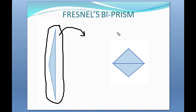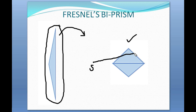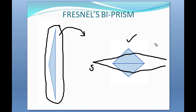Now if you think that this is Fresnel's biprism, here there is a source and the light travels in this way. A prism bends light such that the angle of deviation is different for different prisms. One ray bends in this direction and the other ray also bends in this direction. These two rays further go and interfere on a screen.